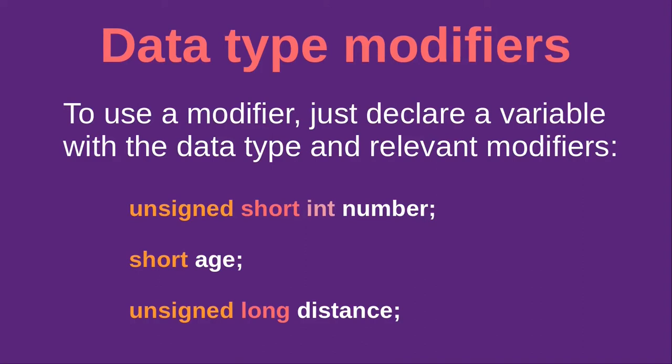To use a modifier, just declare a variable with the data type and relevant modifiers. For example, unsigned short int numbers — that variable will never hold a negative value, it will be a positive number, it is short meaning it falls within the short range, and it is an integer. We can also declare a short variable which falls within the short range, and an unsigned long distance variable.